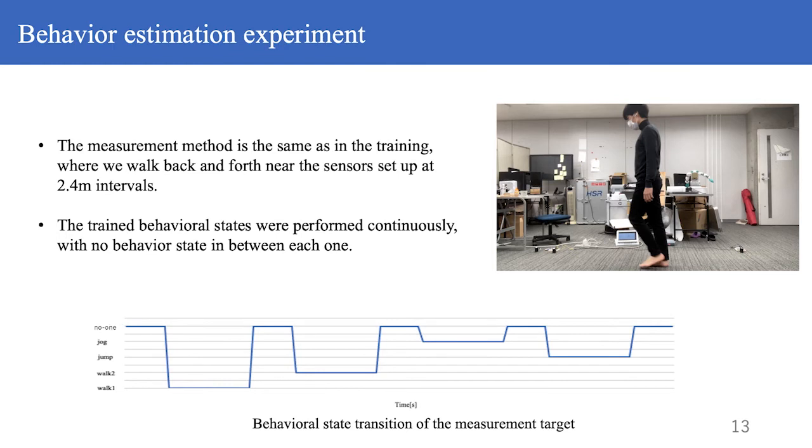Next, we will discuss the behavior estimation experiments. We set up two sensors at 2.4 meter intervals and measured the behavior between them. We prepared the behavior patterns we used in training and performed them in order with no behavior in between. The transition of the behavior pattern used in this experiment is shown below. And this movie is what the experiment looks like.